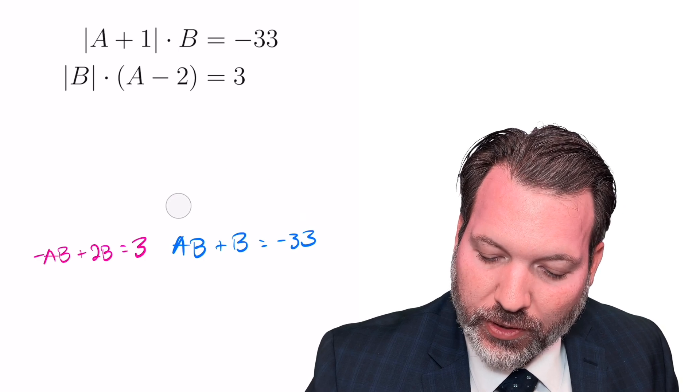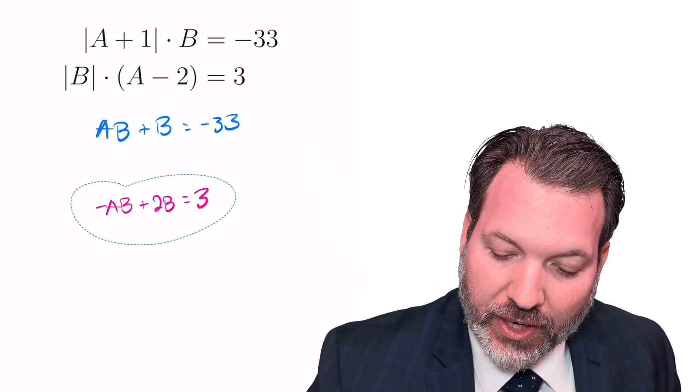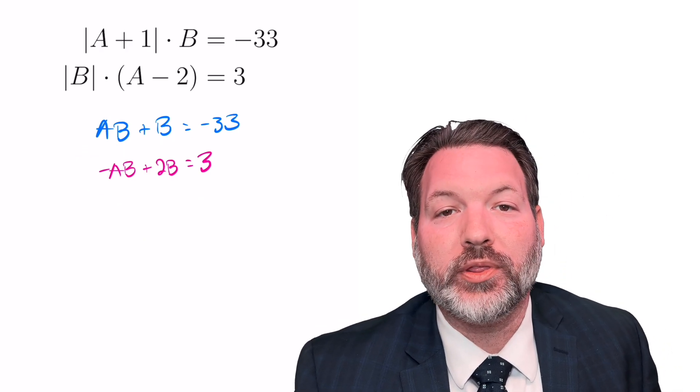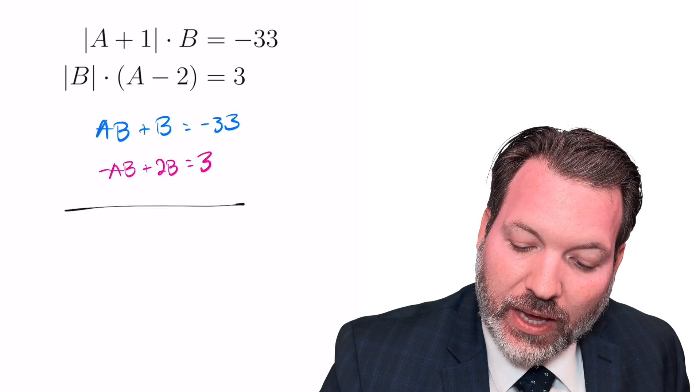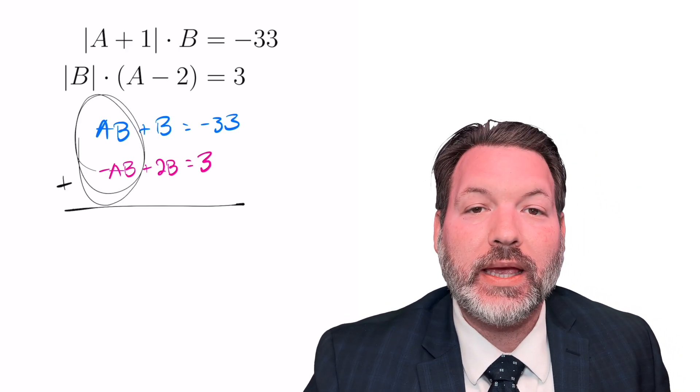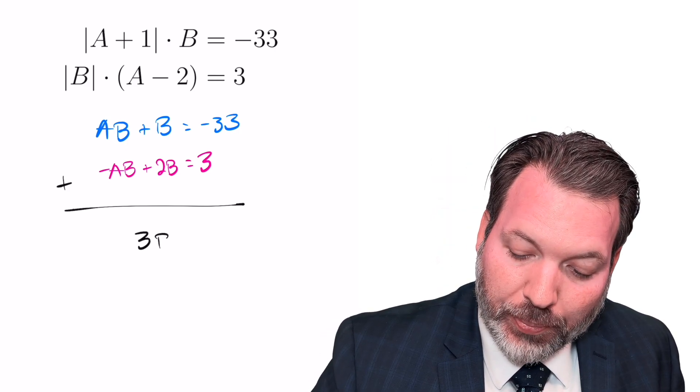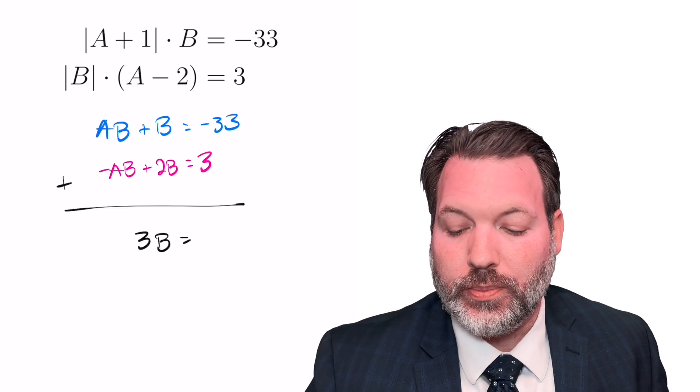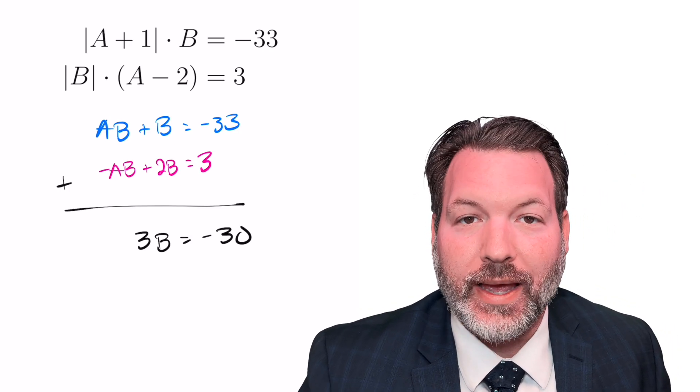At this point, that means we're dealing with a regular old system of equations. No absolute value necessary. We just want to try and come up with a clever way to cancel out a variable in this system. And you can tell if we simply add these two equations together, the ab and the negative ab are going to make zero, leaving us with b plus 2b, or 3b, equals negative 33 plus 3, which is negative 30.